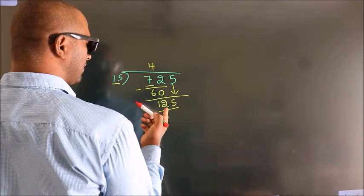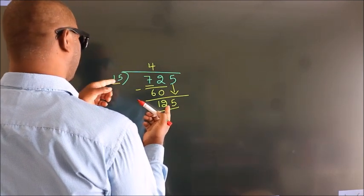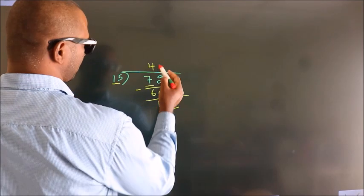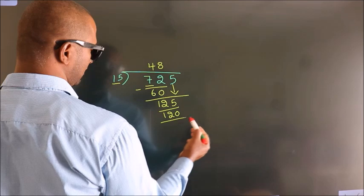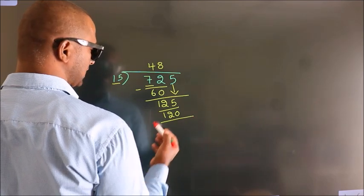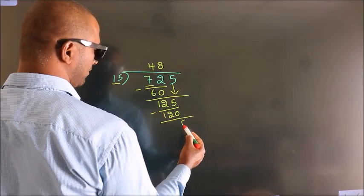A number close to 125 in the 15 table is 15 times 8, which is 120. Now we subtract, and we get 5.